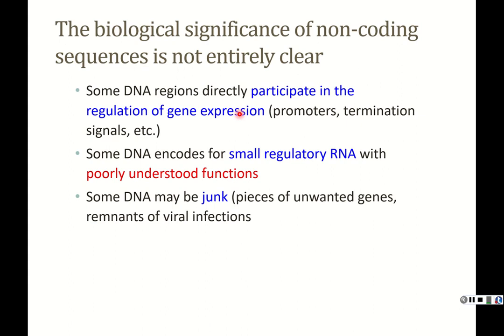We know that some DNA regions directly participate in the regulation of gene expression — things like promoters, termination signals — and we'll talk about those in upcoming lectures. Some DNA encodes for small regulatory RNA, and we don't always know what their exact functions are. Some DNA may just be what we'd refer to as junk: pieces of unwanted genes, remnants of viral infections, things leftover from a different time but incorporated into the genome. Evolutionarily, there may be a benefit to having this junk DNA around.